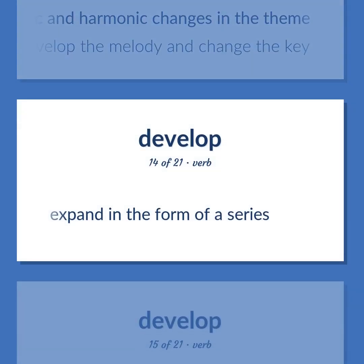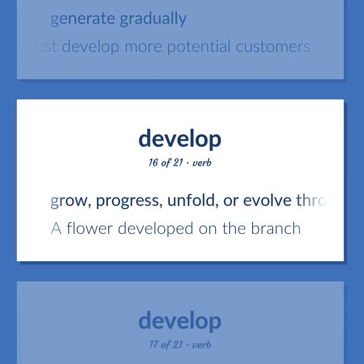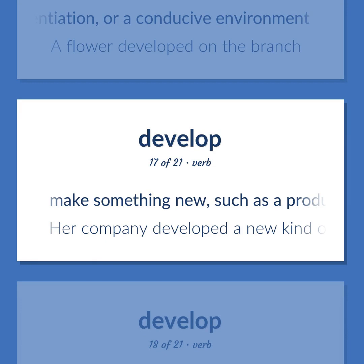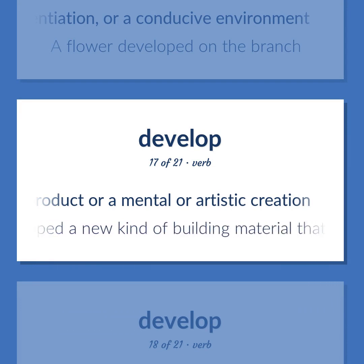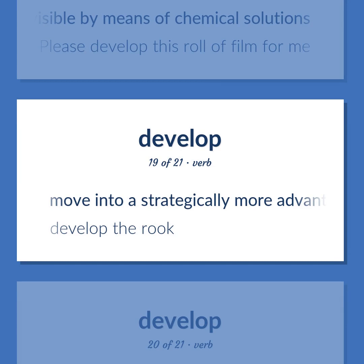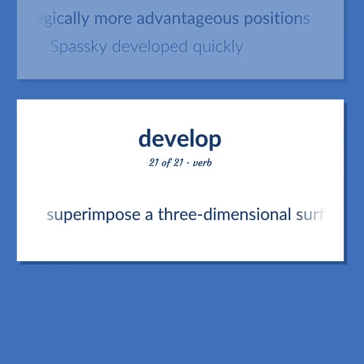Expand in the form of a series. Generate gradually — we must develop more potential customers. Grow, progress, unfold, or evolve through a process of evolution, natural growth, differentiation, or a conducive environment — a flower developed on the branch. Make something new, such as a product or a mental or artistic creation — her company developed a new kind of building material that withstands all kinds of weather. Make visible by means of chemical solutions — please develop this roll of film for me. Move into a strategically more advantageous position — develop the rook. Move one's pieces into strategically more advantageous positions — Spassky developed quickly. Superimpose a three-dimensional surface.